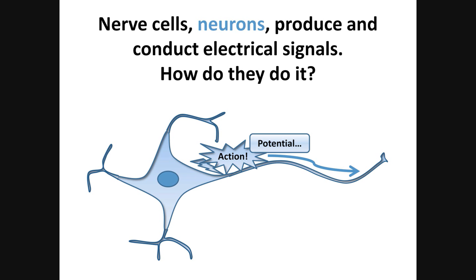But what is the signal? We call it action potential, or AP. Where is it? It spreads along the cell membrane like a wave, shown in the picture by the arrow.